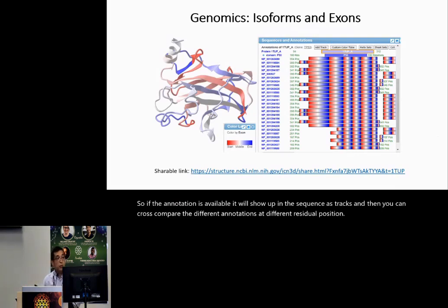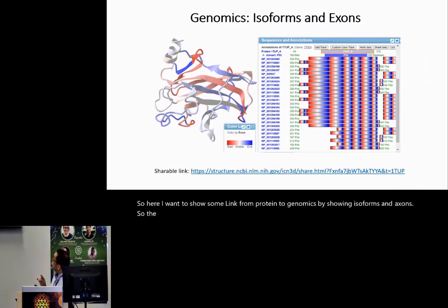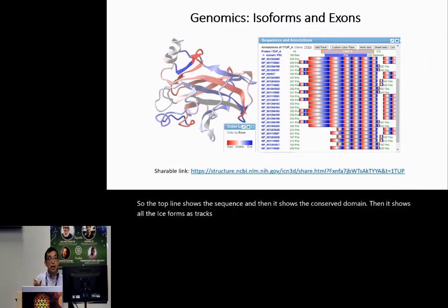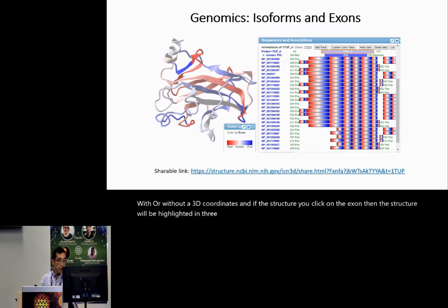Here I want to show a link from protein to genomics by showing isoforms and exons. The top line shows the sequence, then the conserved domain, then all the isoforms as tracks. All the exons are shown with or without 3D coordinates. If there's a structure, you click on the exon and the structure will be highlighted in 3D.